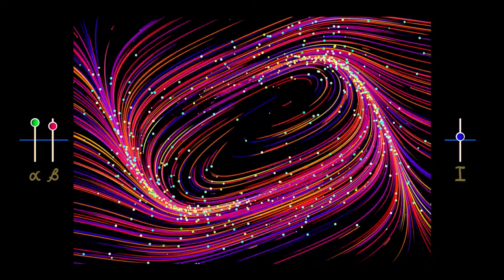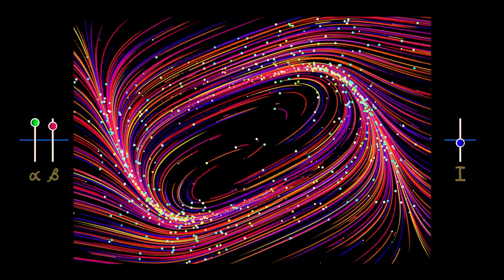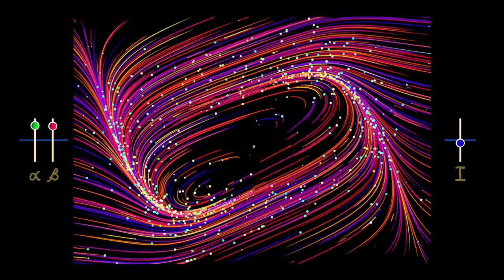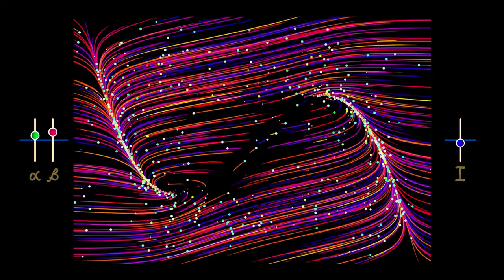It's pretty clear that depending on these parameters, you can go from, say, a single sink or a single source to having a saddle and then a pair of sinks or spiral sinks or sources, spiral sources, or all kinds of interesting stuff that can happen. Now, this is a three parameter system. That means your parameter space is three dimensional. And it's kind of difficult to explore.